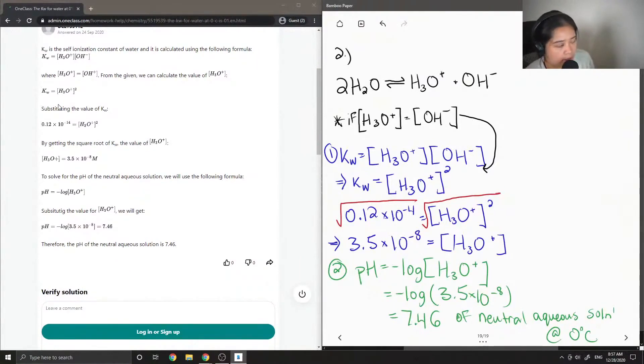Okay so they showed that the KW is equal to the concentration of H3O plus squared, and then substituting the value of KW they got the 0.12 times 10 to the negative 14.